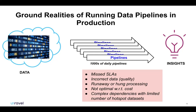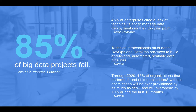Various studies highlight that 85% of big data projects fail. Speaking from experience, it is very easy to get the initial hypothesis in place, but by the time you productionize it, you really have to think about whether you have the right mechanisms in place to run it actively in production.